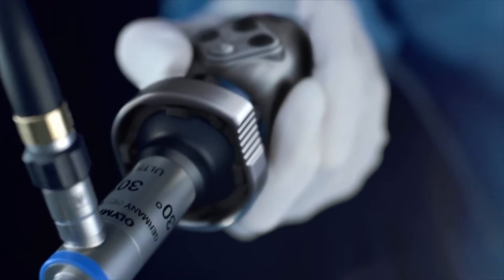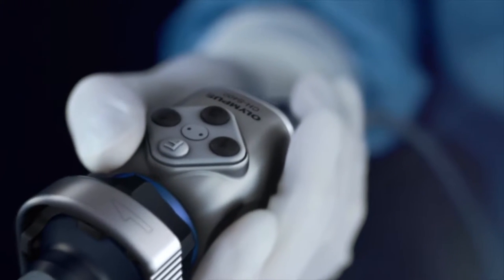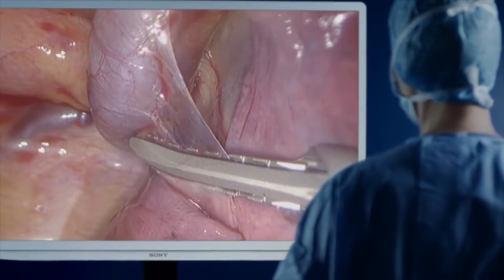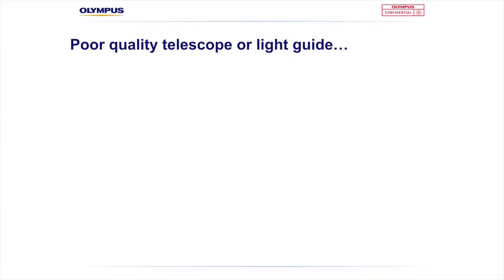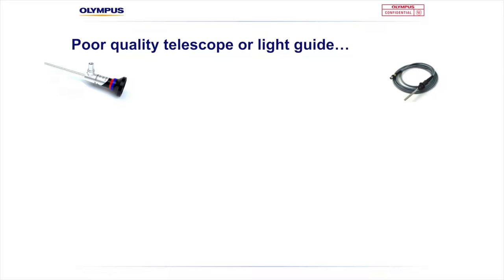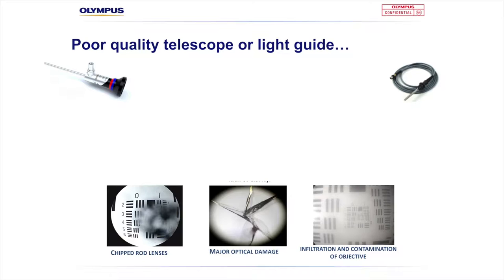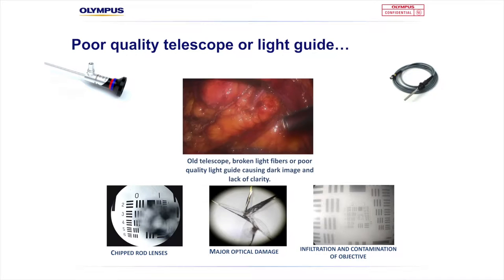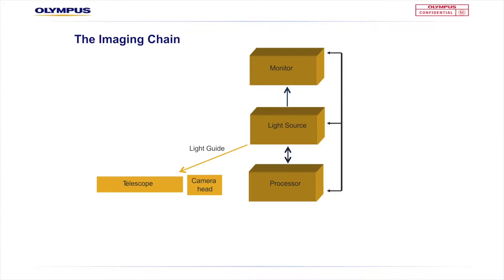For example, when we connect a rod lens telescope onto a good quality camera head such as a 4K camera head, we digitise the image at the camera head. But what if imaging chain components prior to the camera head aren't of the best quality? What if your light supply is dull, your light guide cable is old, or your telescope is old, damaged, or has moisture in the tube? When that happens, resulting image quality can be jeopardised. A video scope allows you to eliminate these issues by wrapping the first three elements of the imaging chain into one device — your telescope, light bundle, and camera head all in one complete scope.